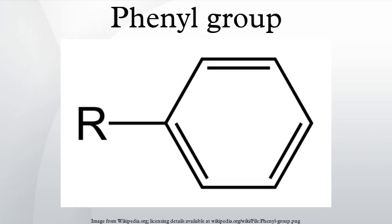These reactions are called electrophilic aromatic substitutions. Phenyl groups are found in many organic compounds, both natural and synthetic. Most common among natural products is the amino acid phenylalanine, which contains a phenyl group. A major product of the petrochemical industry is BTX, consisting of benzene, toluene, and xylene, all of which are building blocks for phenyl compounds.